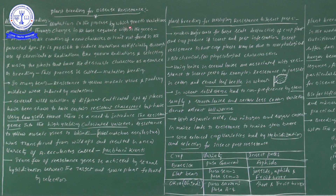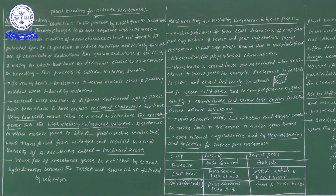Mutation is a process by which genetic variations are created. Mutations mean sudden changes which can be seen in the chromosomal genetic material — chromosomal order.